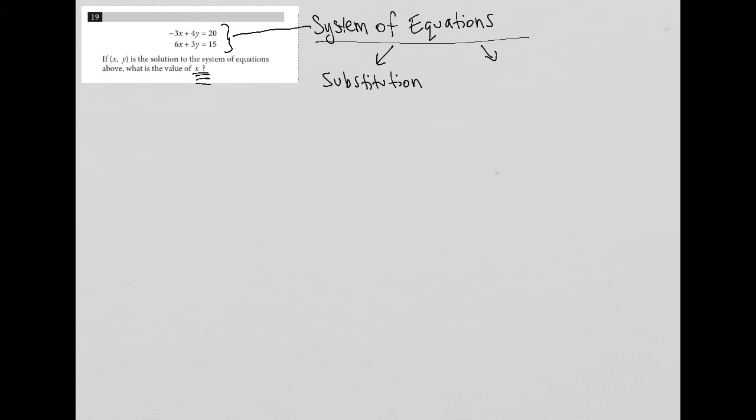And the second more commonly used method on this test for system of equations is elimination. So, this is the one we're going to use today because we don't have an isolated variable. Each variable x and y have coefficients in front.